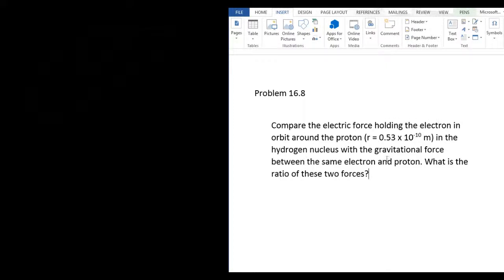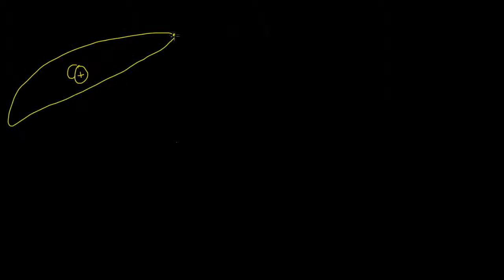So they want us to compare the electric force with the gravitational force. I'm going to start with a picture. Here's a proton in a hydrogen atom, and here's the electron in orbit around it. The distance between them is 0.53 times 10 to the negative 10 meters.